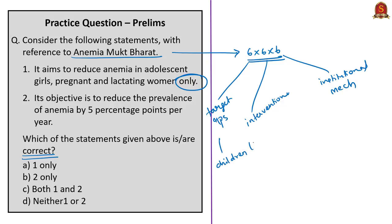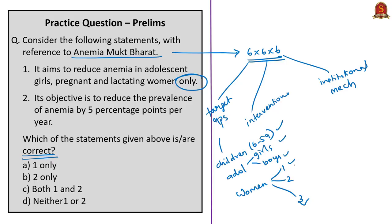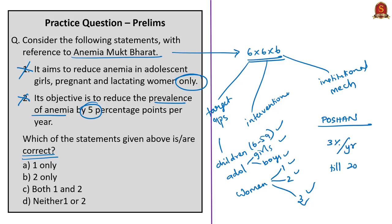Statement two says its objective is to reduce the prevalence of anemia by five percentage points per year. This is also incorrect — we saw that this strategy is compatible with Poshan Abhyan, which targets a reduction of three percentage points every year for anemia among young children, women and adolescent girls. Since both statements are wrong, the correct answer is option D — neither one nor two.